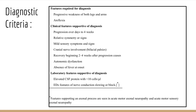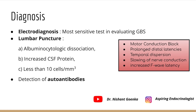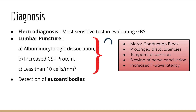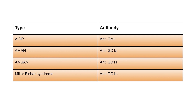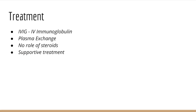Laboratory criteria include elevated CSF protein with less than 10 cells per microliter. Electrodiagnosis is the most sensitive test for evaluating GBS; features include motor conduction block, prolonged distal latencies, temporal dispersion, slowing of nerve conduction, and increased F-wave latency. On lumbar puncture, albuminocytologic dissociation is an important finding. Autoantibodies differ by subtype: anti-GM1 in AIDP, anti-GD1a in AMAN and AMSAN, and anti-GQ1b in Miller Fisher Syndrome — all are potential MCQ points.